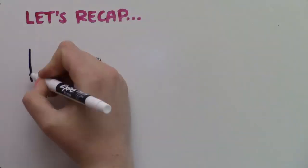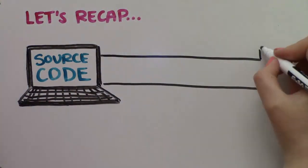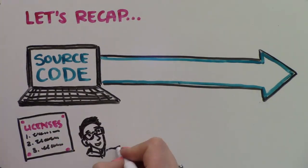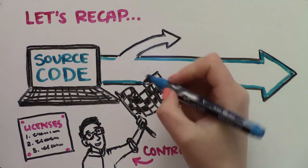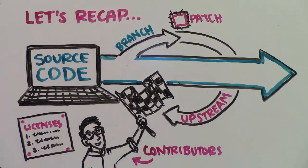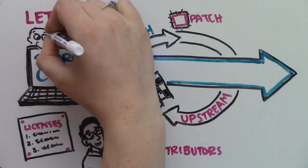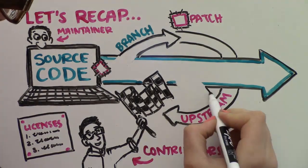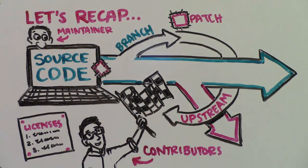Let's recap quickly. Someone writes an original version of open source software and sets rules around how it can be used and changed, called licenses. This gives contributors a starting point to branch out from and make changes or patches. Some request their changes to be upstreamed to merge their new version with the original. If the maintainer decides to incorporate the change, it becomes part of the main branch and will be maintained by the community even if the contributor stops being involved. Sometimes software is taken in a direction that will not be incorporated back into the original version — this kind of permanent split is called a fork.